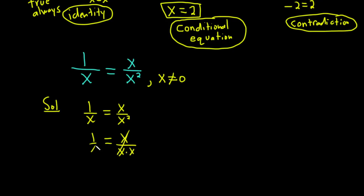And so we lose one of the x's. So this is 1 over x equals 1 over x. This is always true for all real values of x in the domain of the variable. So this is an identity.